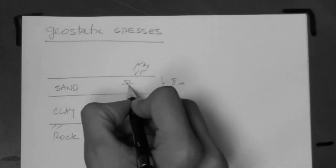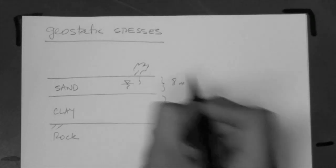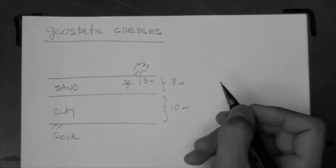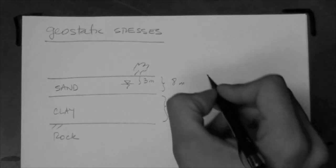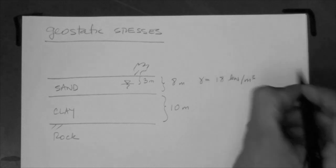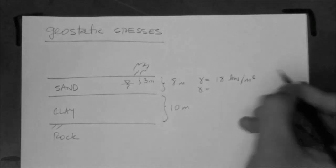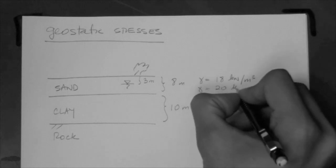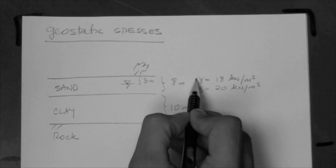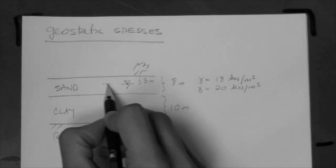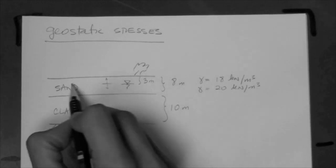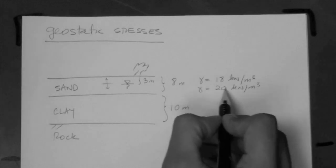We can say that the water table is here — let's say this is three meters from the ground surface. We could say that the sand has a unit weight of 18 kilonewtons per meter cubed when it's dry, and 20 kilonewtons per meter cubed when it's saturated. So the unit weight for the sand above the water table is 18, and from this level downwards is 20.